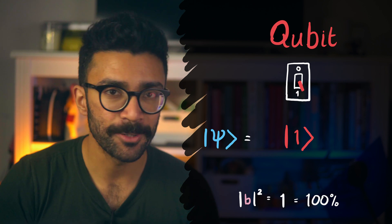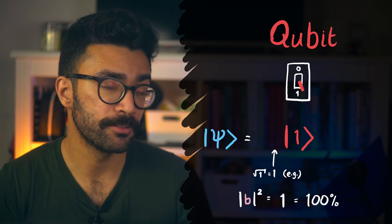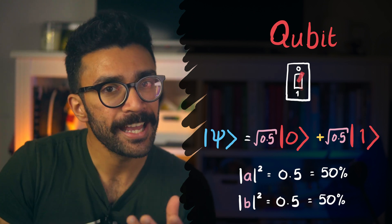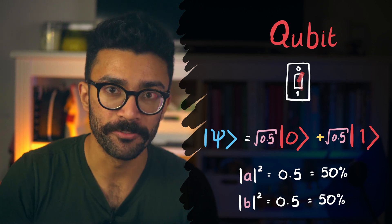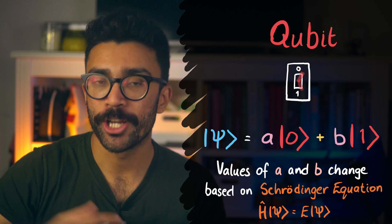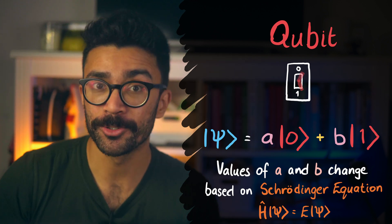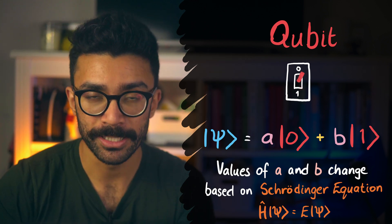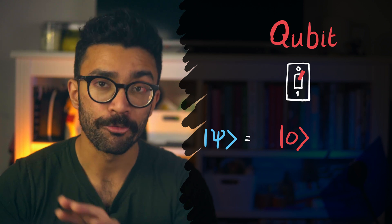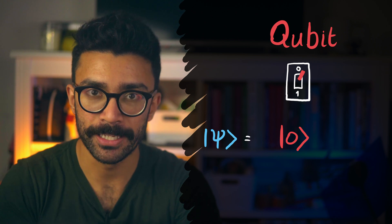If it's 100% likely that we'll find our system in the one state, for example, then A is zero and B is square root of one, which is one as well. But if we've got a 50-50 chance of finding either state when we measure it, then A and B are both equal to the square root of 0.5. And in between making these measurements, these values of A and B can change over time based on the Schrödinger equation. More about that in this video up here. I'll also link it in the description box below. As soon as we make a measurement, though, the state of the system immediately flips to one of the possible measurement result states, randomly. But the likelihood of it falling into one or the other is given by the square of A and B that we've just looked at.